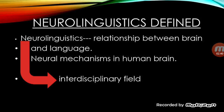Neurolinguistics, on the other hand, studies the relationship between the brain and language. It is concerned with those neural mechanisms in the human brain that control language production, comprehension, and acquisition. Neurolinguistics is also an interdisciplinary field which makes use of methods and theories of other fields such as neuroscience, linguistics, cognitive science, communication disorders, and neuropsychology.